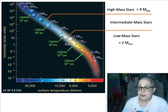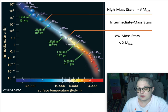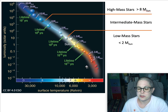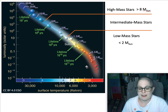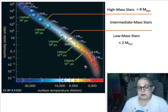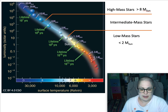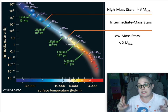Something that is a tenth the mass of our sun is going to last for probably closer to like a trillion years. That's how long such a star spends fusing hydrogen — we say it's on the main sequence.